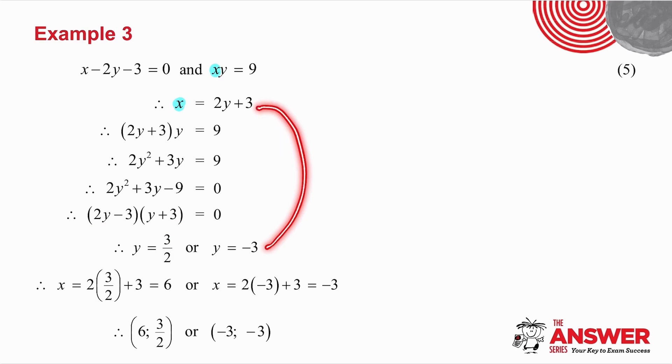Substitute back into this equation here, and you get your corresponding values of x. So, x is 6, y is 3 over 2, or x is minus 3, and y is minus 3.